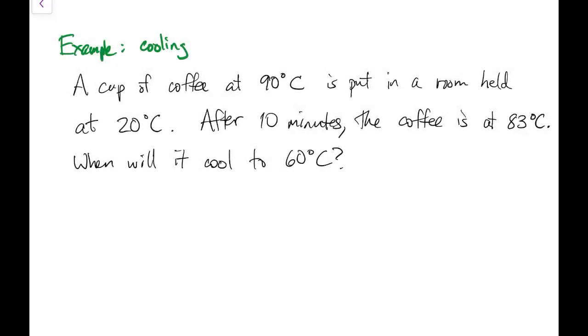Here's an example from cooling. You have a cup of coffee at 90 degrees, and it's in a room at 20 degrees. You also know that after 10 minutes, the coffee's at 83 degrees. When does it reach 60 degrees? So here, x would be the temperature of the coffee, and z is the difference between the temperature of the coffee and the temperature of the room.